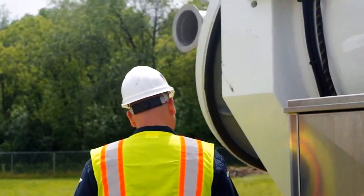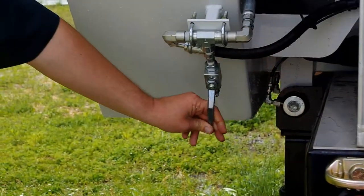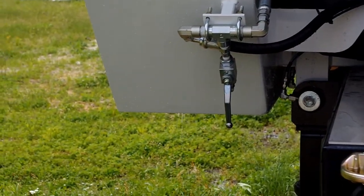After the nozzles have been purged, open the purge valve on the passenger side of the truck to ensure all of the water is out of that line.